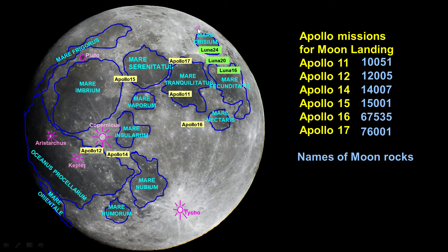Now a little change: Moon rock 67535 — 6 is from Apollo 16, 7 is from station number 7. Moon rock 76001 is from Apollo 17, from station number 6. If there is a Moon rock named with all zeros like 80000, they are fake. Moon rocks cannot be sold legally. If you see some Moon rocks for sale, the FBI may investigate that — it would likely be a lunar meteorite, not a real Apollo Moon rock.